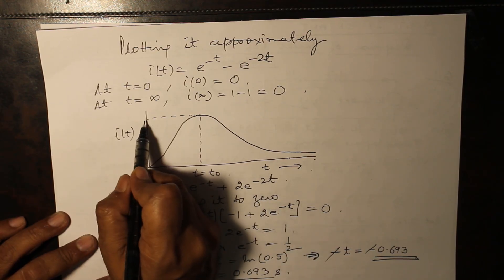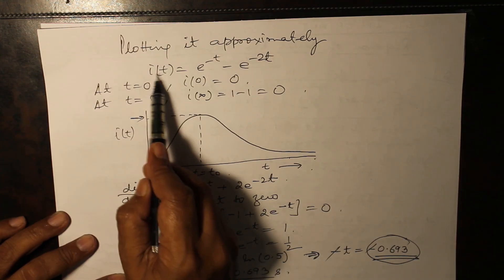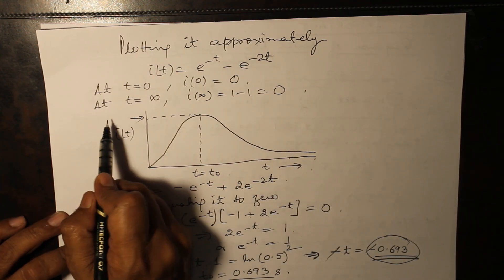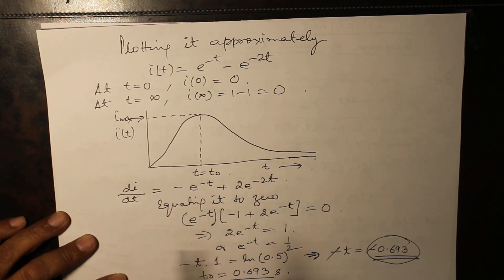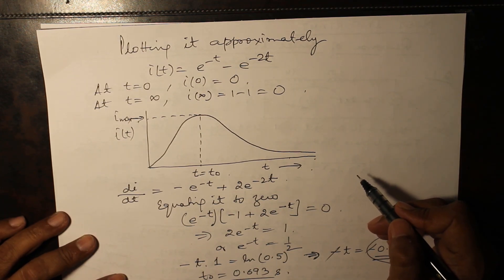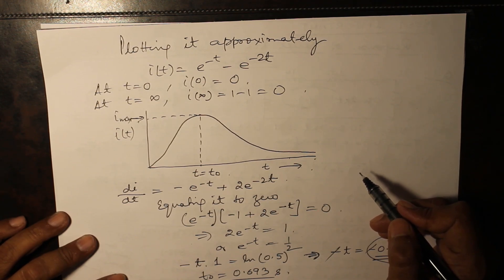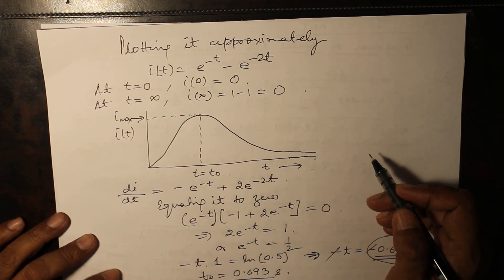If you want to find the value of i at the maximum, just substitute this time into the expression for i(t) and you will obtain the peak value. I think this much is sufficient for the classical method. More questions will be added in subsequent videos when previous year papers are covered. Since the internal exams are on, this much is sufficient for today. Thank you.